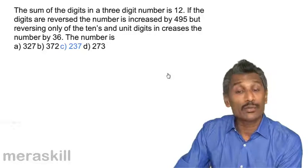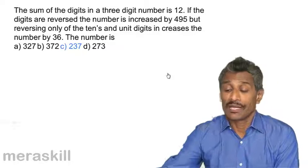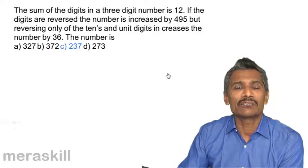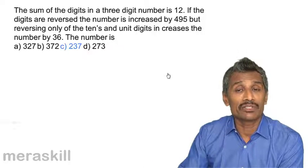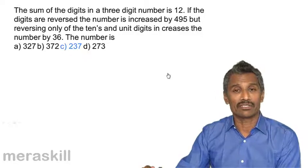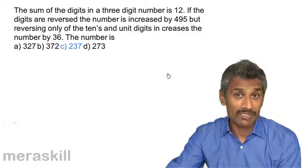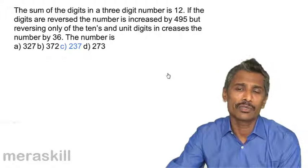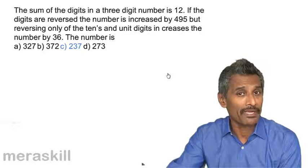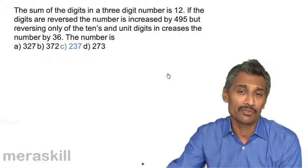Thus, we have covered equations in two and three variables. All of them follow a similar principle: converting from an equation in three variables to two variables, then to one variable through elimination. We also saw that for word problems and MCQ formats, substituting values and eliminating options logically is often the smarter, time-saving approach.